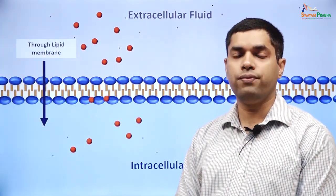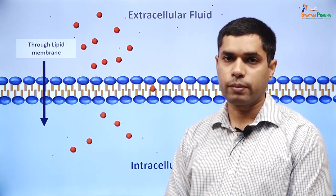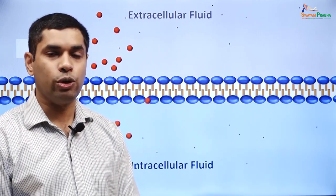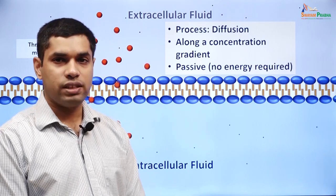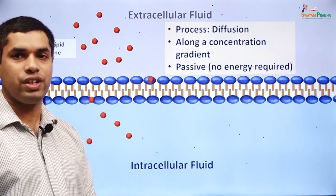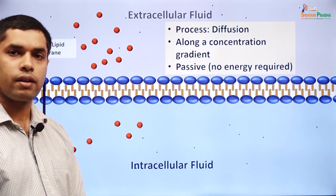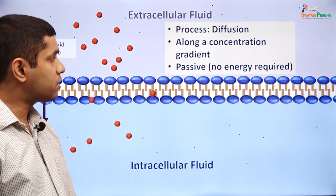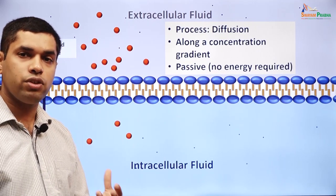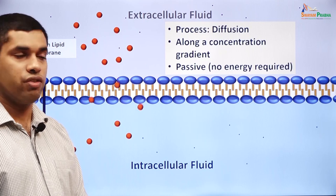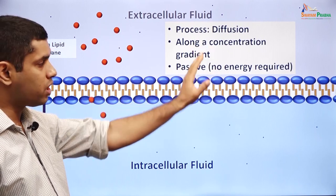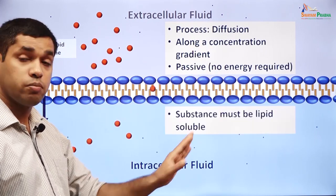Let us now look at diffusion through the cell membrane. For diffusion to happen through the cell membrane, the substance must be lipid soluble. This is a passive process — it occurs from a region of higher concentration to a region of lower concentration across the membrane. No external energy is required because the energy needed for diffusion is already present in the concentration gradient. So diffusion is a passive process occurring along a concentration gradient, and the substance must be lipid soluble.